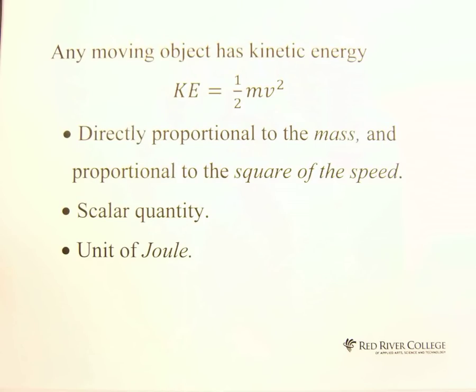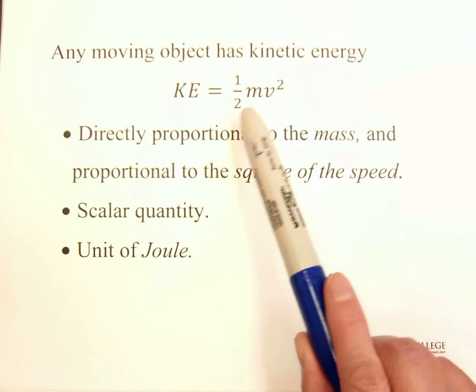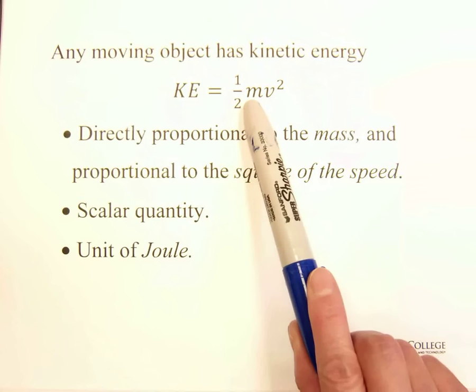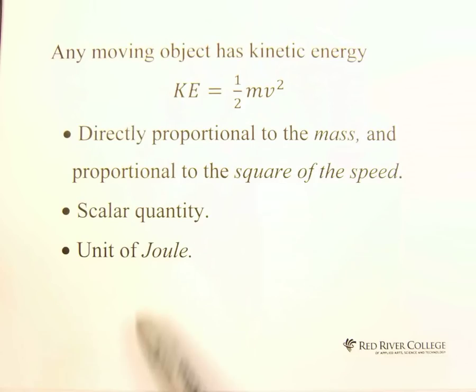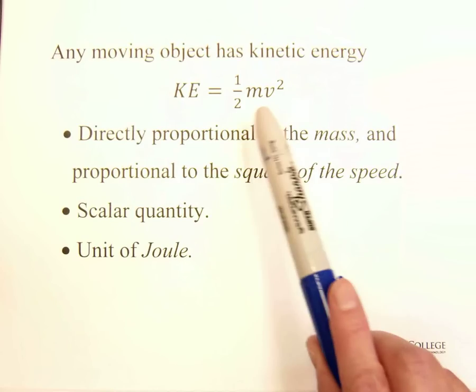It means kinetic energy is directly proportional to mass and proportional to the square of the speed, v squared, square of the speed.